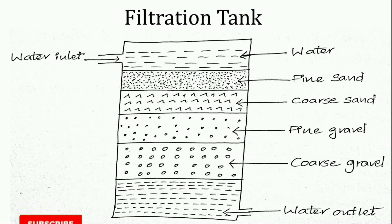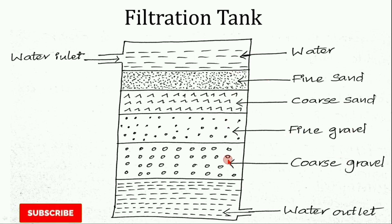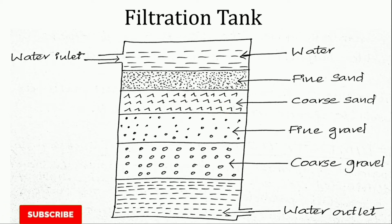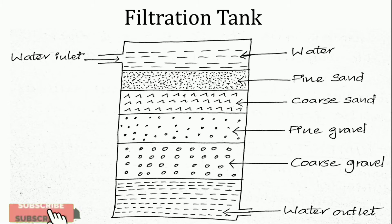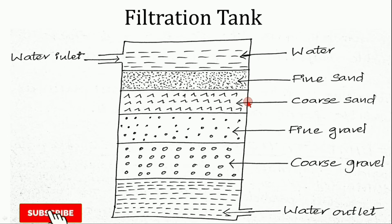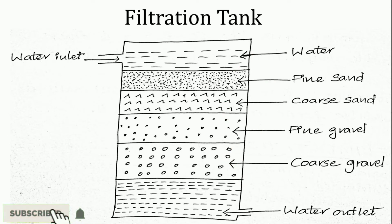The filter bed has a thick top layer of fine sand, followed by coarse sand, fine gravel, and coarse gravel. The rate of filtration decreases slowly due to clogging of impurities in the pores of the sand bed. When the rate of filtration becomes very slow, filtration is stopped, and the thick top layer of fine sand is scraped off and replaced. Bacteria are also partially removed by this process.